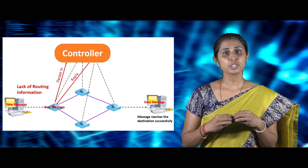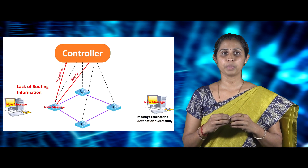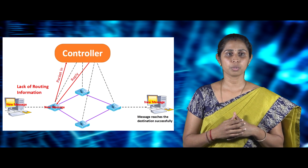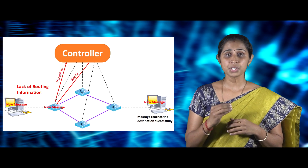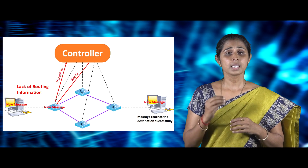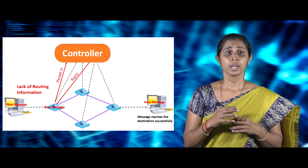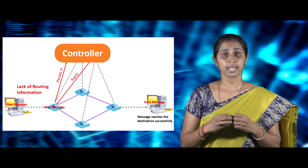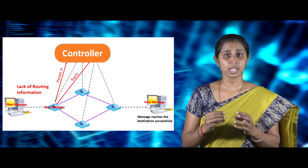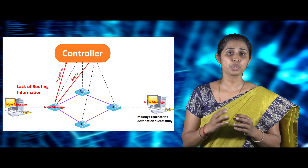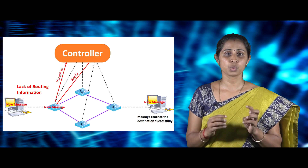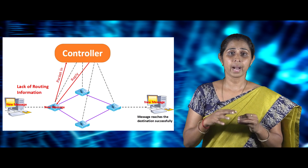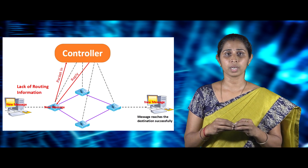There are two categories of controllers in the SDN control plane: single controller and multi-controller. In the initial stage of SDN design, a single controller manages the entire network. Let us assume that we have one controller C1 and four switches S1 to S4, so the one controller C1 manages the four switches in the network.